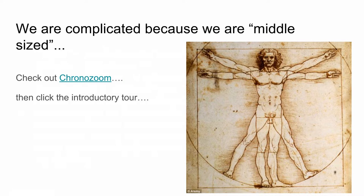As John Gribben says, we are the most complicated because we are middle-sized, and he takes the first few pages of the chapter to explain that. I also found this website called ChronoZoom that I think you guys, if you have the time, should take a look at. It's in beta right now, but it's really a fascinating way to get perspective on life and time of our universe. When you get there, just click the introductory tour if you have an interest.